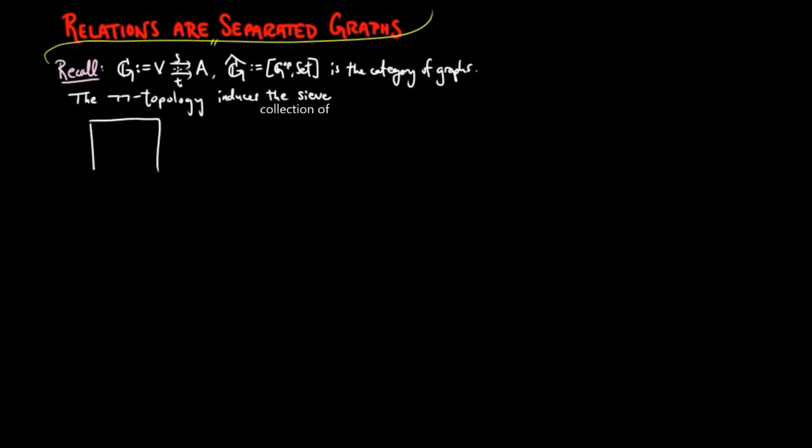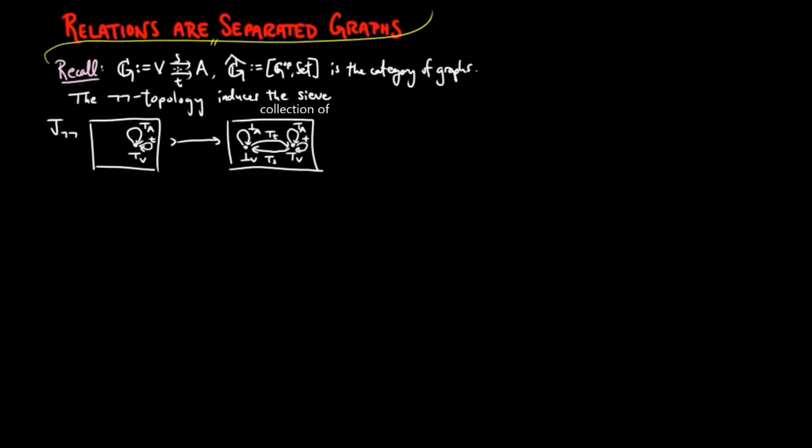The double negation topology can be interpreted as the following sub-object of the sub-object classifier. Then the category of separated objects with respect to this topology is reflective in the category of graphs.